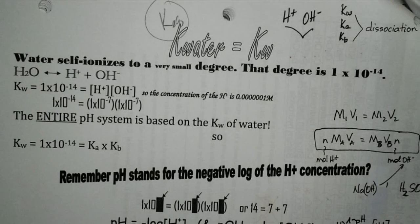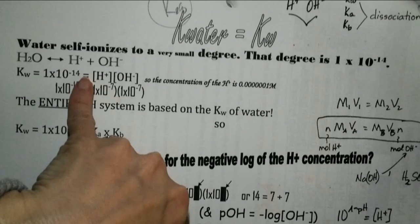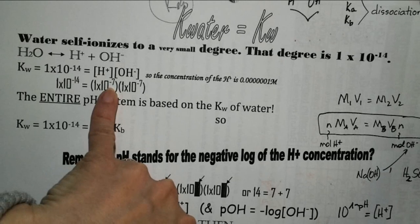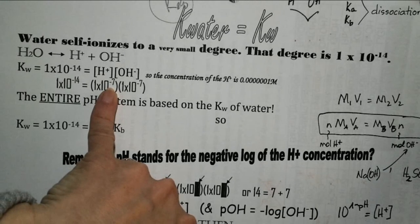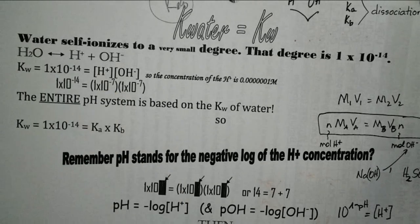To what amount does it self-ionize? It does that to 1×10⁻⁷. So at any one time, 1×10⁻⁷ — about 0.0000001 moles per liter of the water molecules — will be split into ions. A very small amount, but enough that we can base the whole pH system on this.